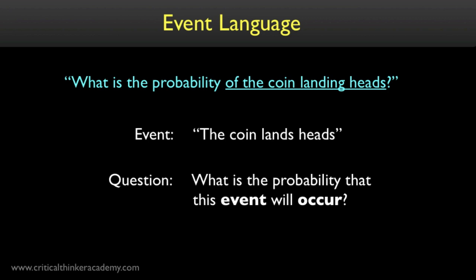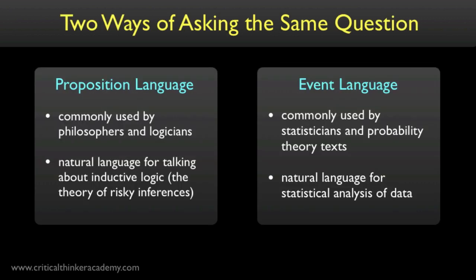So in the event language, we interpret the probability of heads is 0.5 as asserting that the probability of an event occurring, the event of the coin landing heads, is 0.5. For the most part, you can think of these as just two different ways of saying the same thing.